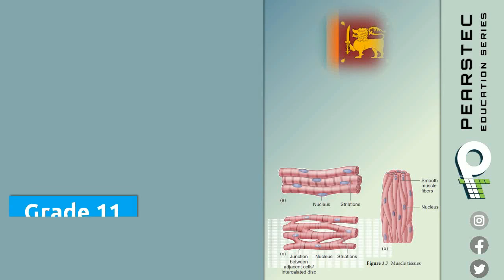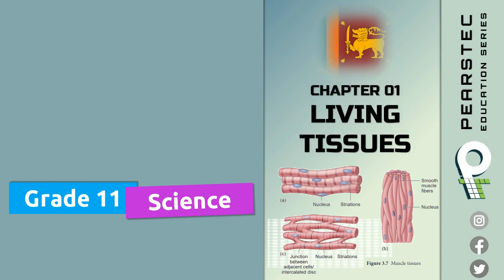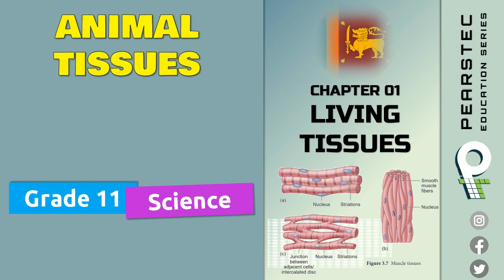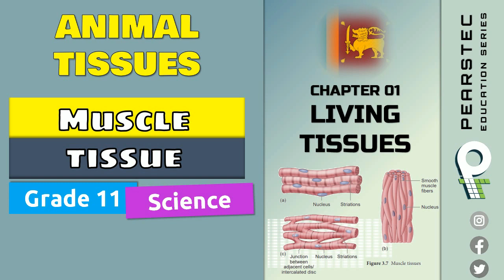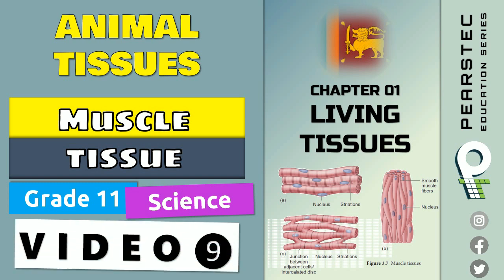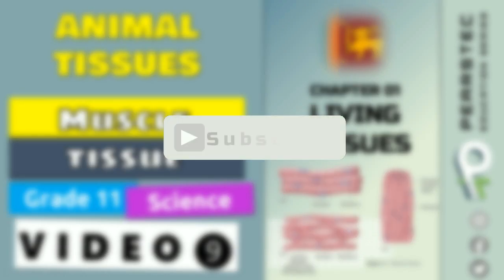Ayuboban to you all once again. Grade 11 science is in front of you one more beautiful time. Chapter 1, living tissue, is what we have been learning about, and under animal tissue we are going to see today the muscle tissue in detail in this beautiful video number 9. Let's get into the subject and learn about muscle tissues with comparisons and get our things right for the examination.